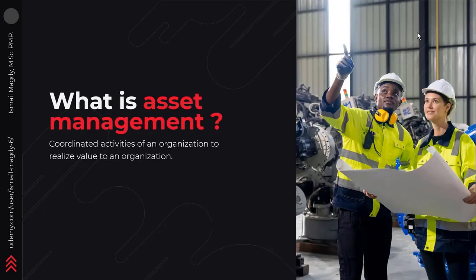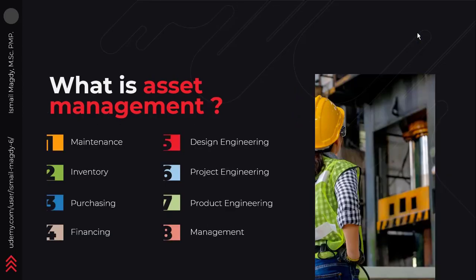Now that we understand what we mean by an asset, we can start learning about asset management. Asset management is the coordinated activities of any organization to realize value from its assets. This means asset management is all of the efforts exerted by an organization to properly manage their assets and obtain the best possible value out of them. Asset management is not just a single activity or process — it is a complete strategic enterprise-wide system of activities.